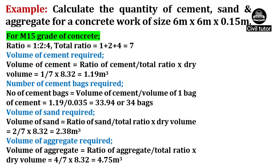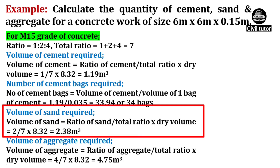The required volume of sand will be equal to ratio of sand upon total ratio, multiplied by dry volume. Ratio of sand is taken as 2, total ratio is 7 and dry volume is 8.32. On substituting these values, the volume of sand will be equal to 2.38m³.